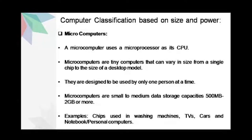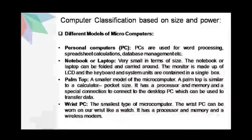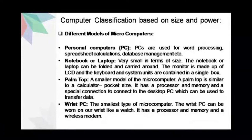Some examples of microcomputers are chips used in washing machines, TVs, cars, and notebook and personal computers. Now let us look at the different models of a microcomputer. The first one is a personal computer or PC. The name PC was given by IBM for its microcomputers. PCs are used for word processing, spreadsheet calculations and database management.